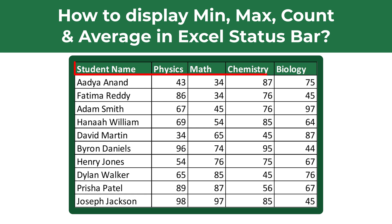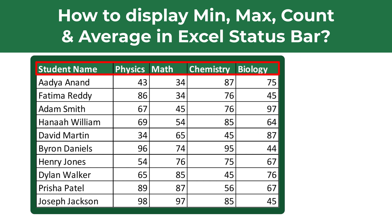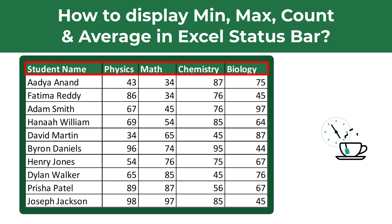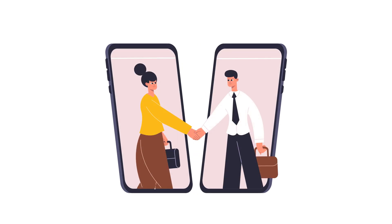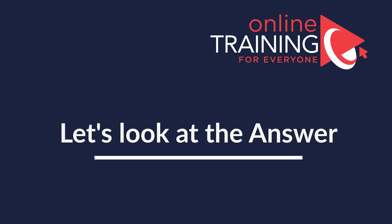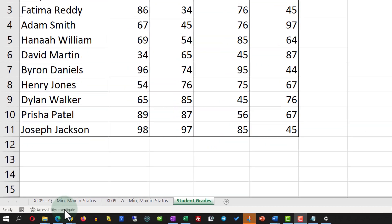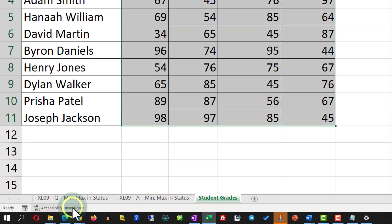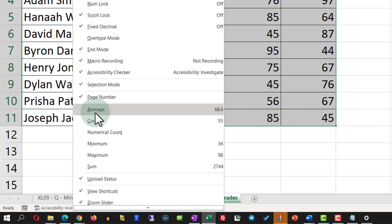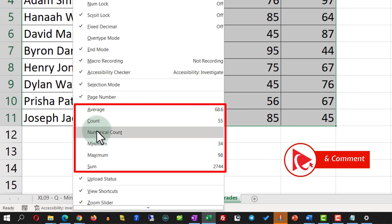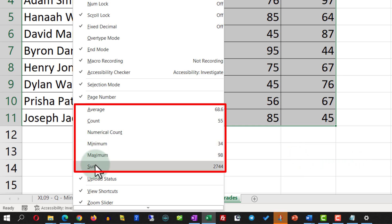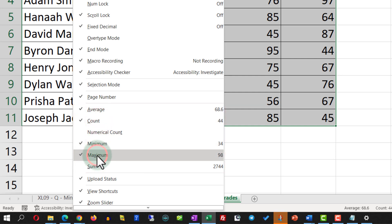The data set displays student names and their grades in physics, math, chemistry, and biology. Do you know how to add auto calculations for their grades in the status bar? To accomplish this task, all properties related to the status bar can be enabled by right-clicking on the status bar itself. This presents us with the formulas for average, count, numerical count, minimum, maximum, and sum. In our case, we need to select average, count, minimum, and maximum.